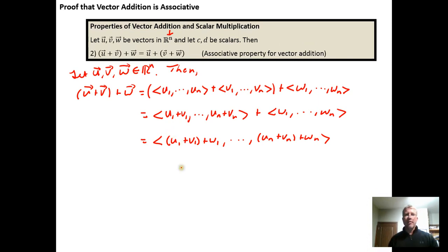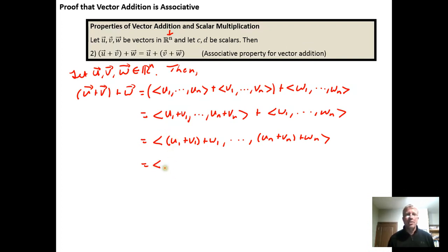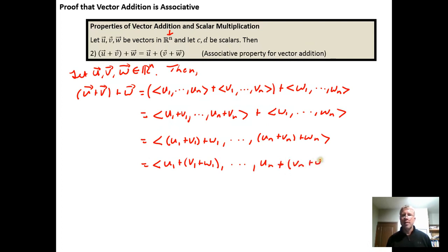We recognize that the components are just real numbers, and we already know that real number addition is associative. So if we group (u sub 1 + v sub 1) + w sub 1, we can regroup it as u sub 1 + (v sub 1 + w sub 1) by the associative property of real number addition. We apply this regrouping to every component all the way through to the nth component.